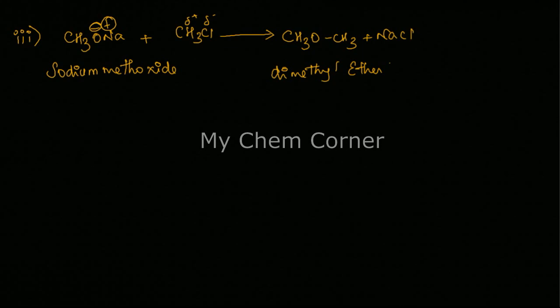So you need a sodium methoxide and some alkoxide reacting with alkyl halide to form dimethyl ether. Now in this, the fourth question is you need to form an unsymmetrical ether.